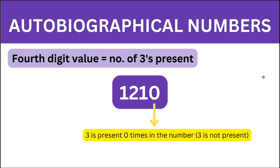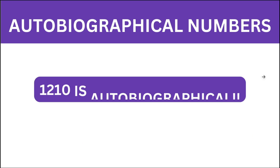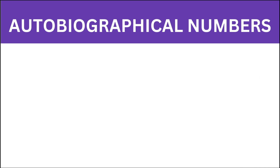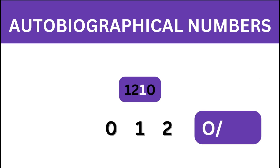The last digit, the fourth digit, denotes the count of 3 in our number. Since our number doesn't contain 3, the value of the fourth digit should be 0, which is also true. So we have checked all the digits and can say that 1210 is an autobiographical number. For the second part, we need to return the count of distinct digits: 0, 1, and 2 are present, so the answer is 3.